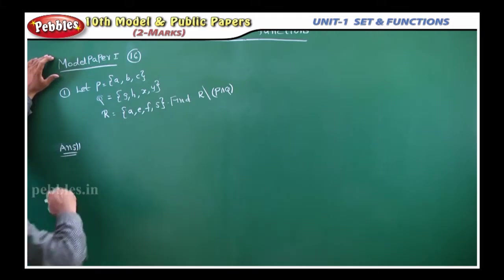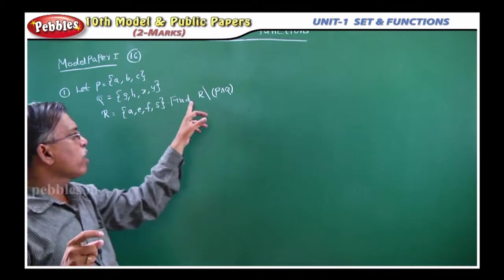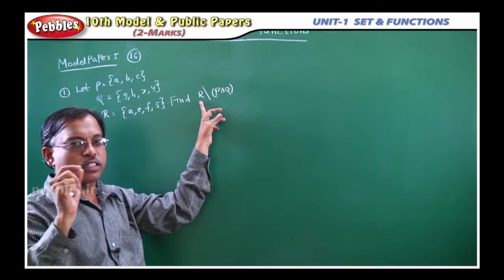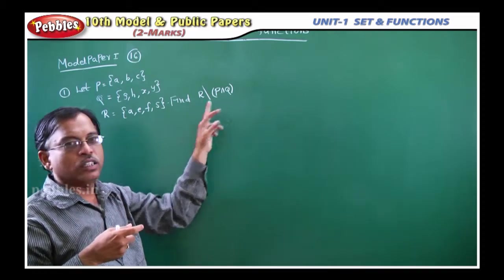And R is a set containing the elements A, F, S. Then find R difference, that is R slash means difference, R difference P intersection Q.